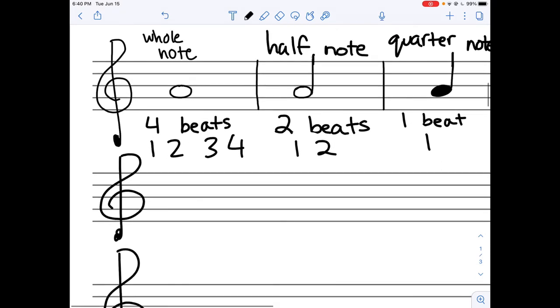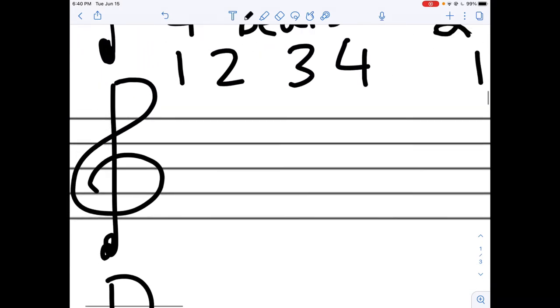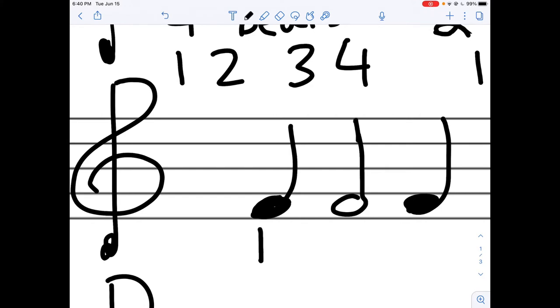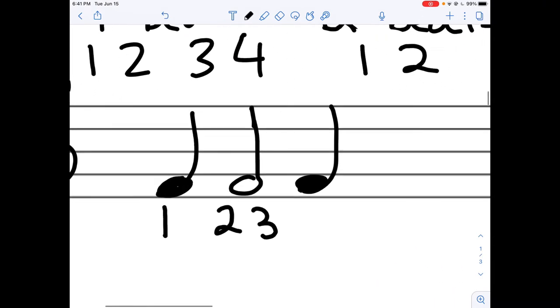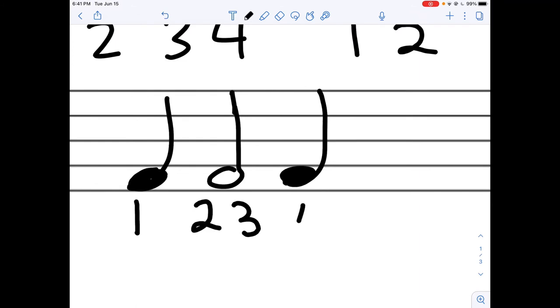Now we can do an example of how to count, how to write in the counts of these note values. Let's write in the counts for this example. A quarter note is one. So I go one, and I know a half note is two. So two, three, the count is still going, and then four, because that's just one beat.